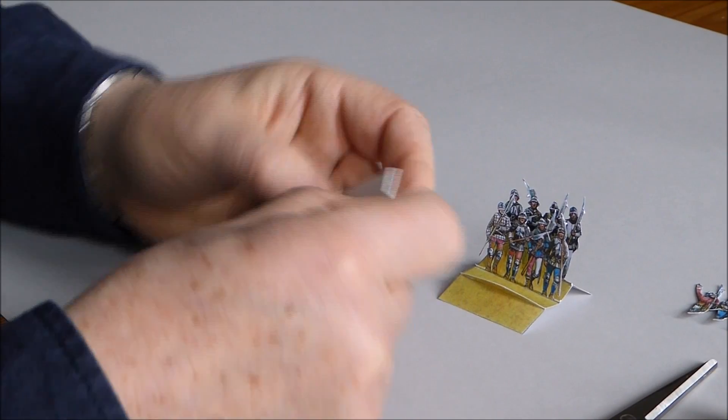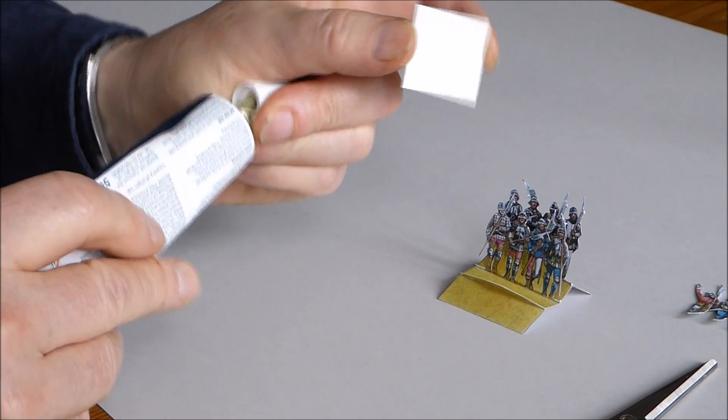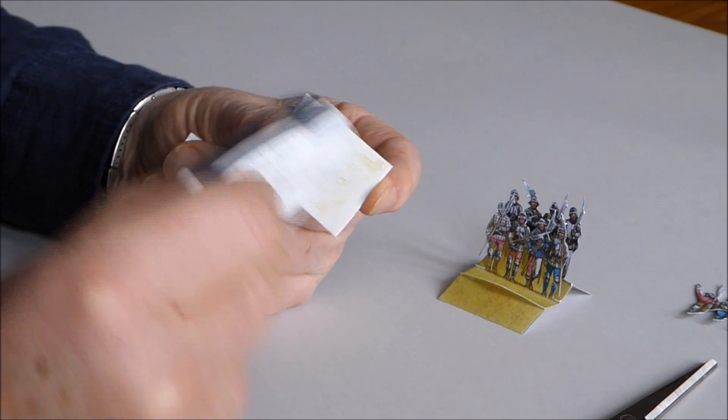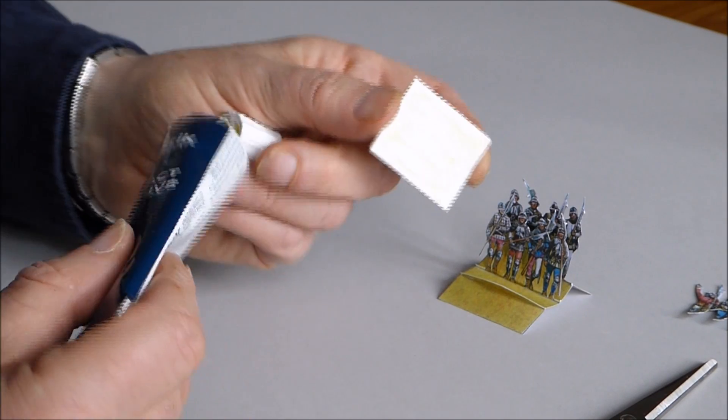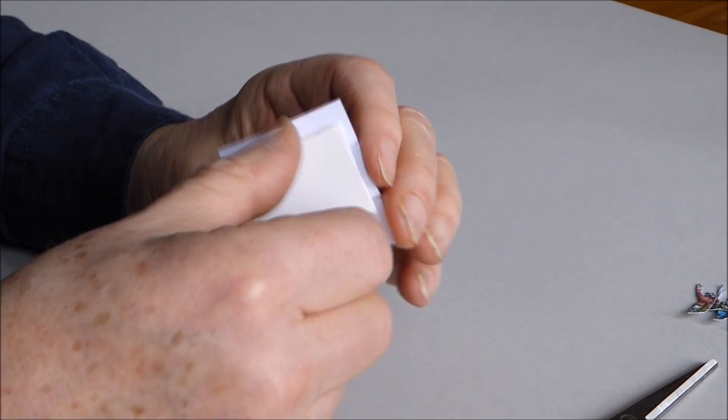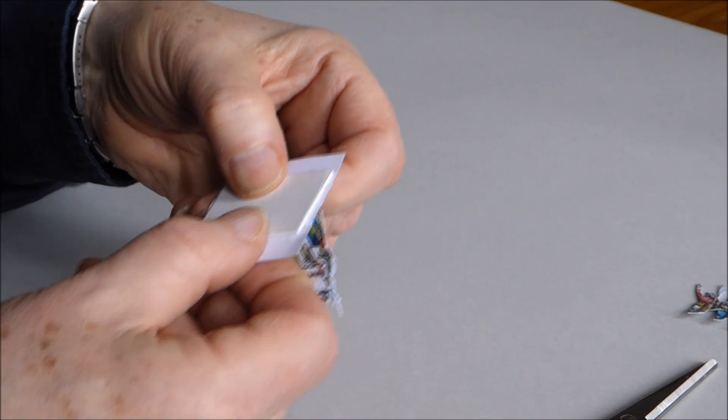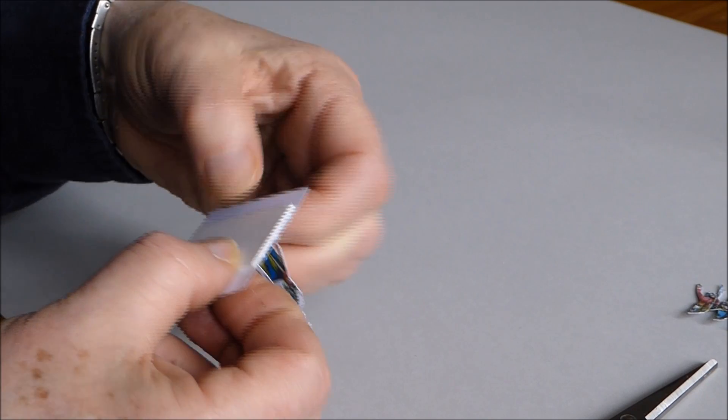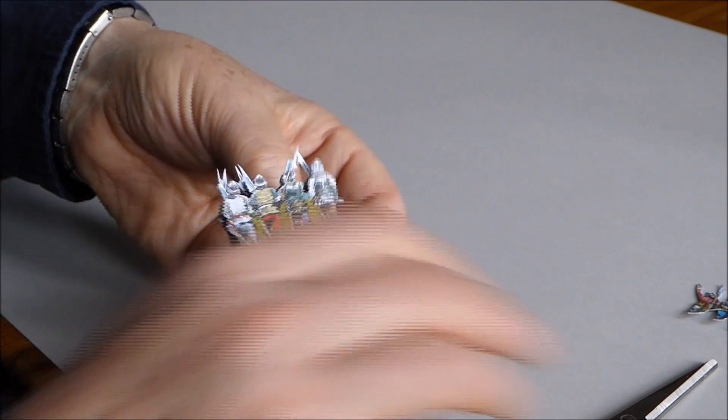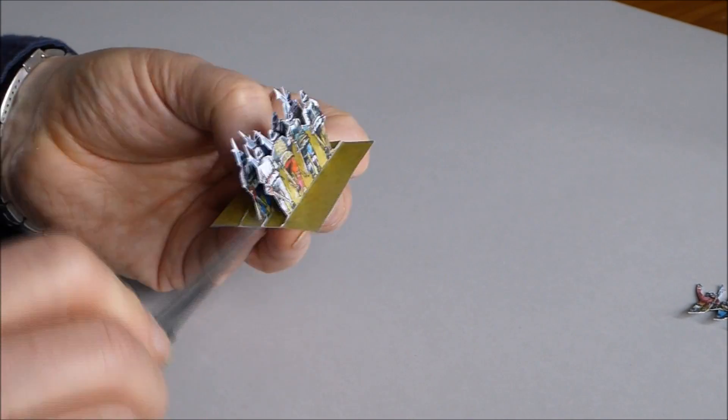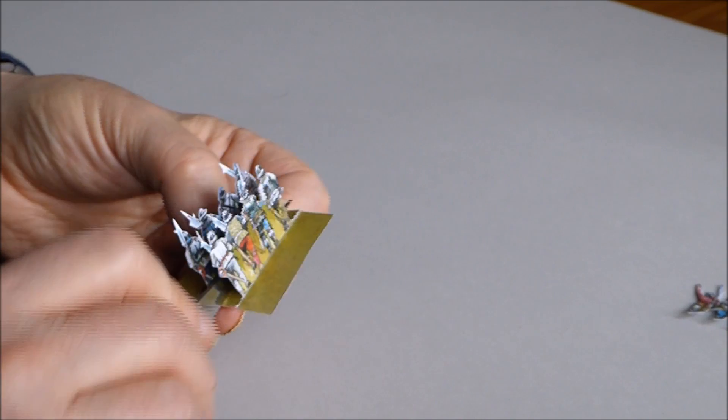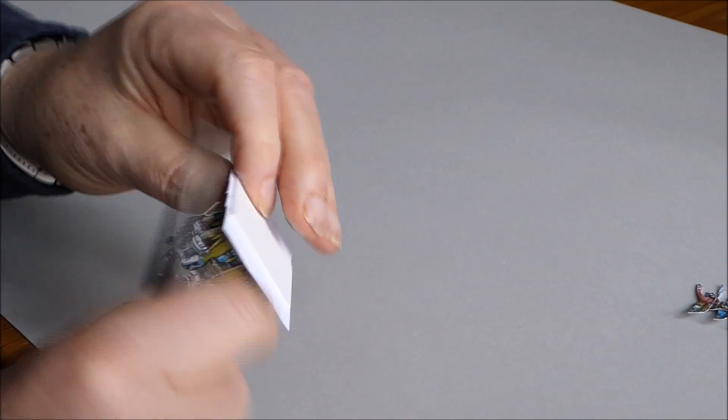The next stage is to put the stand onto the base. And for this I use impact adhesive rather than Yoohoo, which is good but doesn't have the same grab that this has. So a little glue on there. Turn the stand upside down. Place it on the bottom and centre it. Just get it more or less centred down the line. Use the scissors just to press down the ground between the ranks.